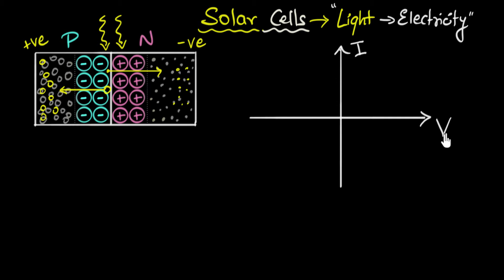Now, because solar cells themselves act like a battery, we need to be a little bit careful — I used to find this very tricky, so let's do this slowly. The way I like to start is by thinking about the open circuit case: let's start by not attaching anything. What's going to happen to the voltage as I keep shining light on it?